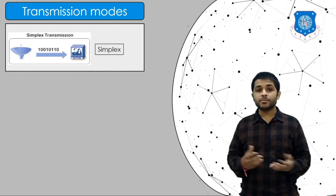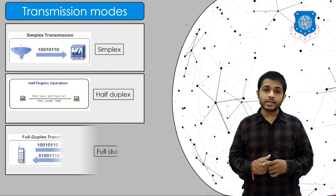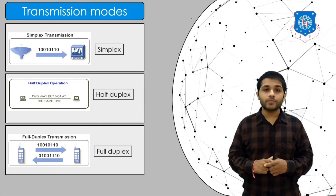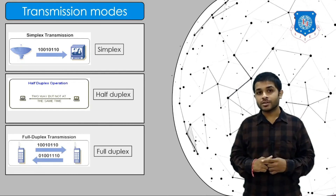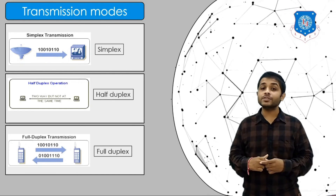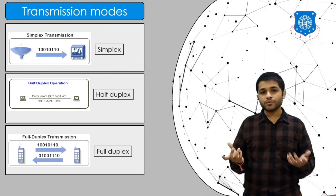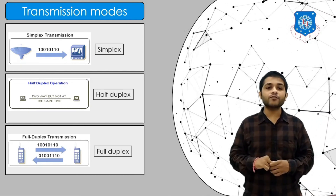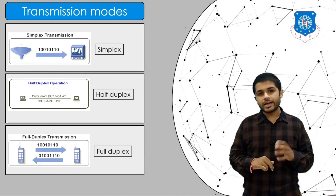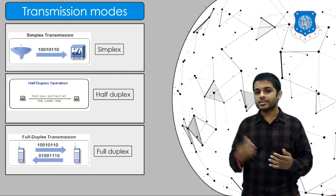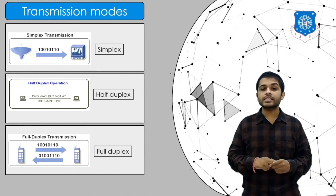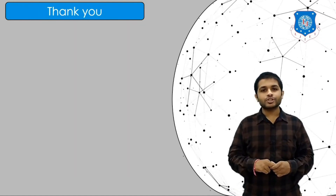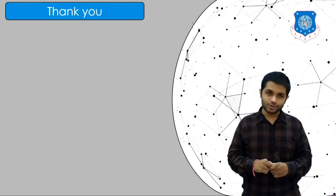There are three types of transmission mode: simplex, half-duplex, and full duplex. Simplex means communication is only one way — for example, TV transmission, where your TV receives a signal from the television tower but cannot send back. Half-duplex means only one device can send data at a time — the example is a walkie-talkie. Full duplex is two-way communication where sender and receiver can send data simultaneously — the example is telephone communication. That's it for today's session, thank you.